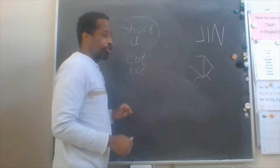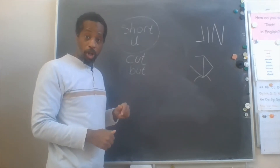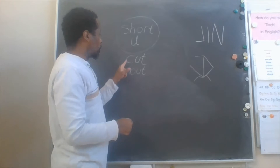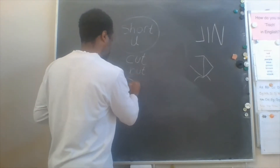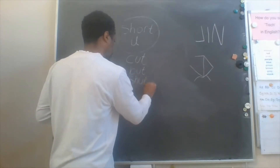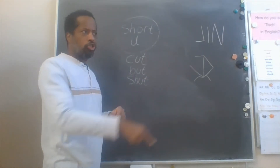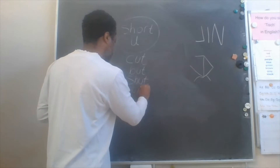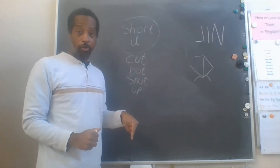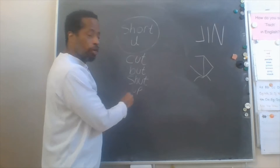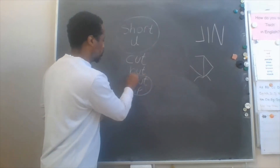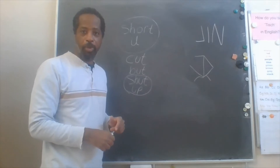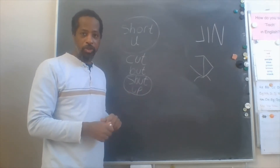But. As I said before, but — we're not talking about the magic E. We're doing short U sounds. Cut and but. Shut. Shut the door — it's too loud. And this one: up. The opposite of down is up. And unfortunately, when you put these two words together, it creates a very rude sentence: shut up. And we've told our children to never say this to each other.